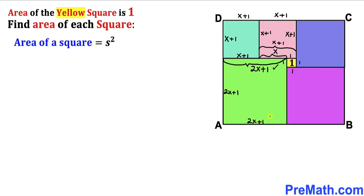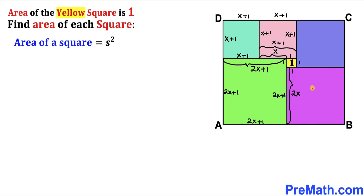Now let's focus on this purple square. We know that this whole side length is 2x plus 1 and this tiny side length is 1, so therefore this side length is going to be (2x plus 1) minus 1, which gives us 2x. So the side length of this purple square is 2x.